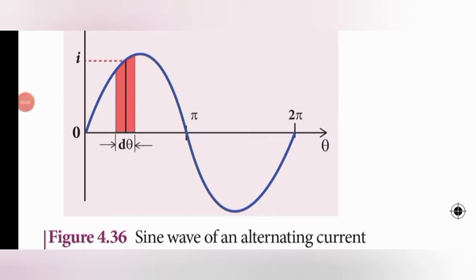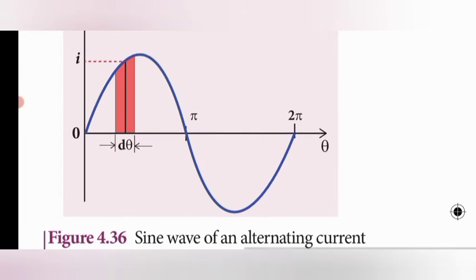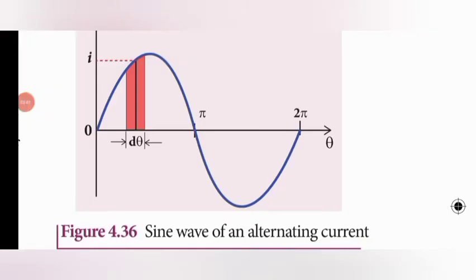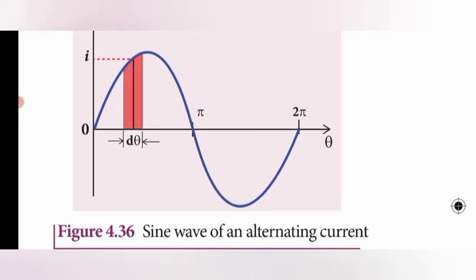Let us consider a sinusoidal wave through which alternating current passes. In this graphical representation, we consider an elementary strip of thickness dθ — shown as the red shaded area. The thickness of the strip is taken as dθ, and i represents the mid-ordinate of the strip, considered as the length. You know that 2π is 360° and π is 180°, starting from zero. The elementary value is dθ, taken in the positive half cycle of the current wave.